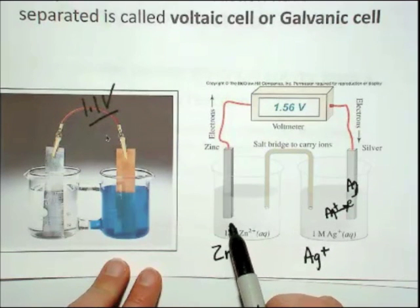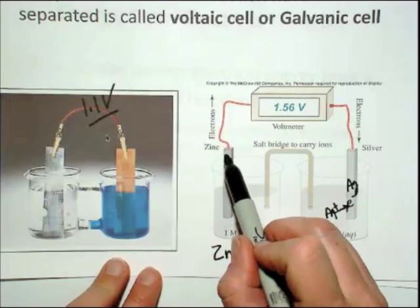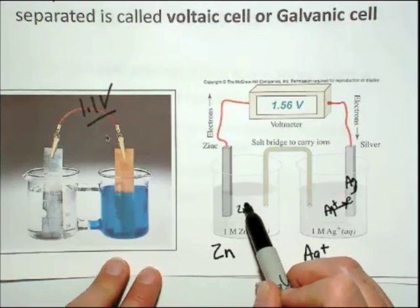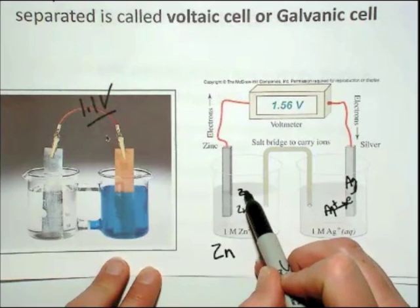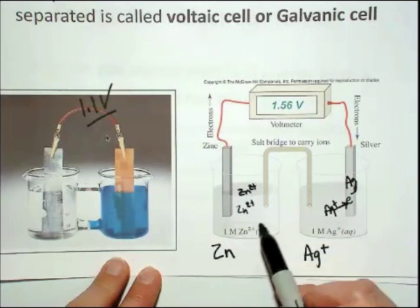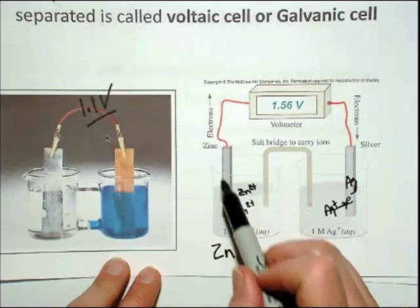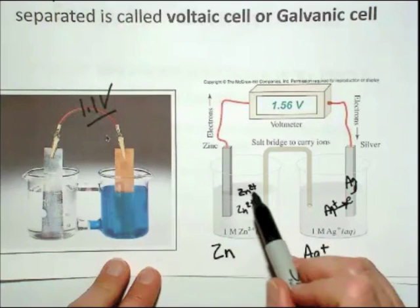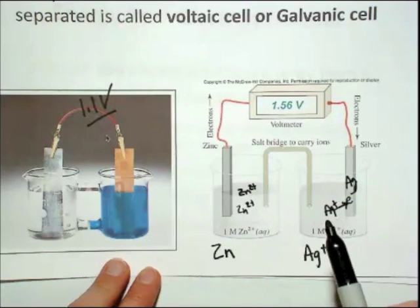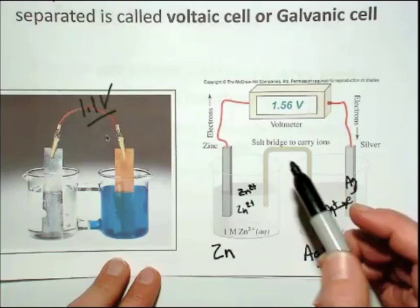if the zinc is giving up electrons and you're getting more and more zinc coming into solution, zinc ion, then the positive charge is going to build up on this side, and it's going to limit the push power of the electrons. If you have a lot of positive charge on this side, the electrons are not going to want to be pushed off this particular electrode.